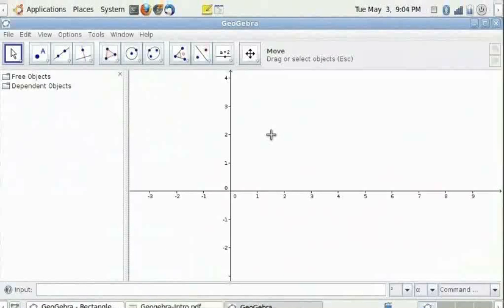A typical GeoGebra window looks like this. It has a standard menu bar like any window based application. The toolbar is like the compass box of GeoGebra.